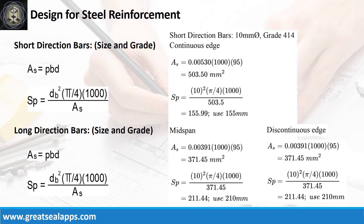At short direction, given continuous edge ρ equals 0.0053; B equals 1,000 mm; and D equals 95 mm. The area of steel is 503.5 mm², and the spacing for 10 mm bar is 155 mm.